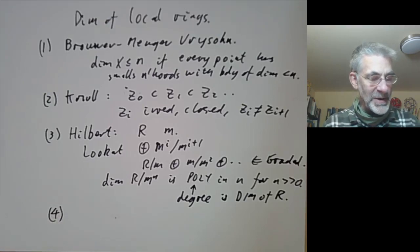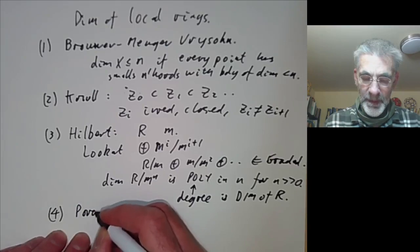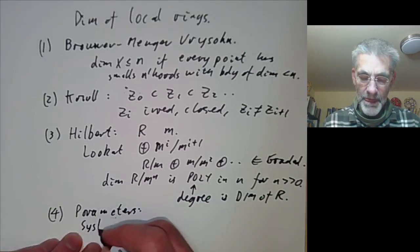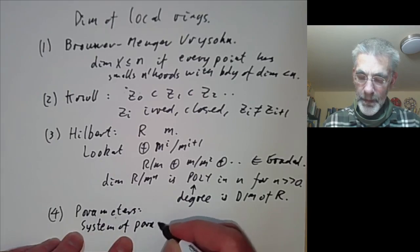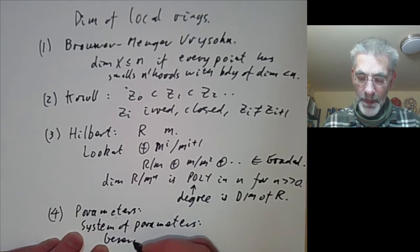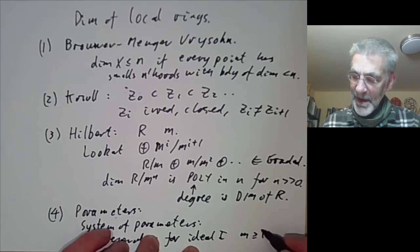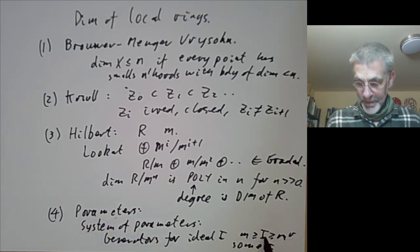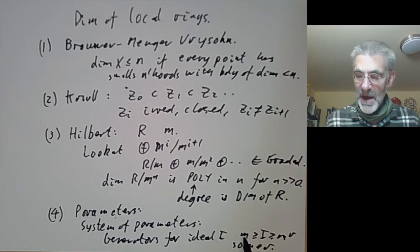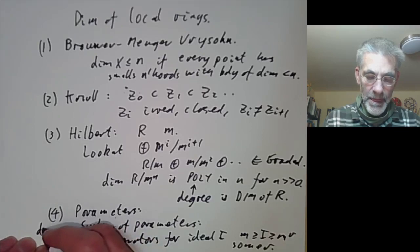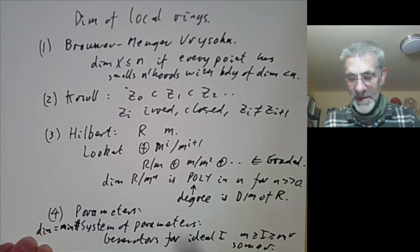The fourth definition is the minimum number of parameters. A system of parameters is a set of generators for an ideal I with M contained in I contained in M^r for some r. A set of generators for M is certainly a system of parameters, but we may find a smaller system that doesn't generate all of M yet still generates some power of M. The dimension is the minimum cardinality of a system of parameters.